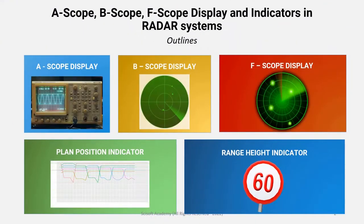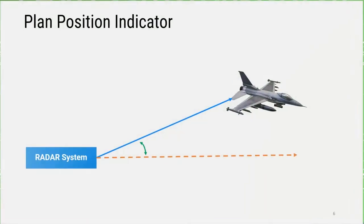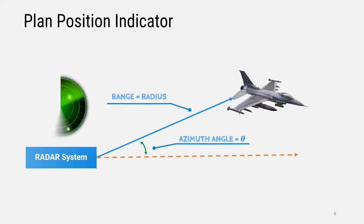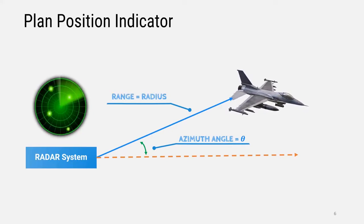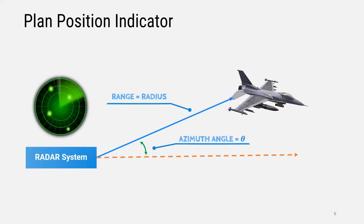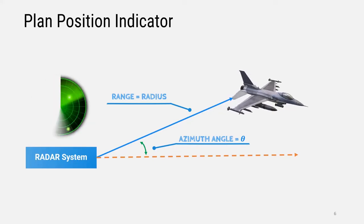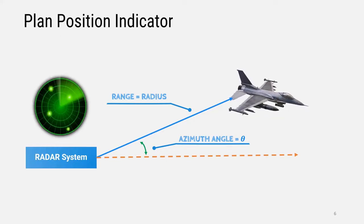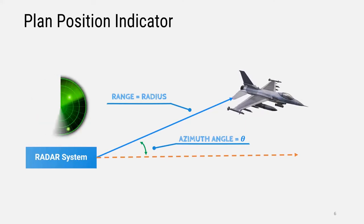This is the plan position indicator. This is a display type where the center of the display is fixed. In a 360-degree radial axis, the waves are passed. The antenna is positioned at the center of the display. This is the basic information about the plan position indicator.